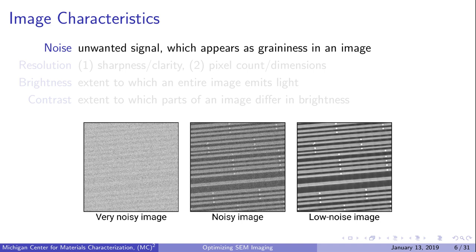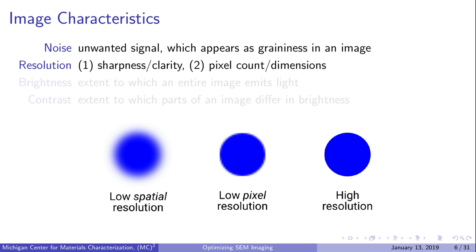Now let's go over some general terminology used to describe images. Noise is any unwanted signal—a signal that doesn't represent what's being imaged, like SE3s. When there is a lot of noise, images appear very grainy or speckled. Resolution has two distinct meanings. The first, sharpness or clarity, refers to spatial resolution, which is how much detail an image contains. The spatial resolution of SEM is around one or more nanometers, depending on the machine. If the spatial resolution is five nanometers, features as small as five nanometers can be distinguished. Images with low spatial resolution appear blurry at normal viewing conditions, even when in focus.